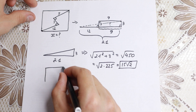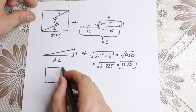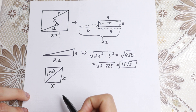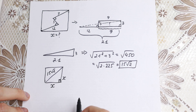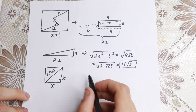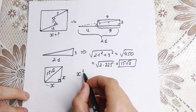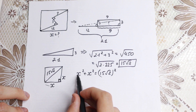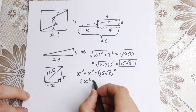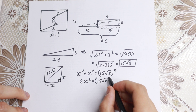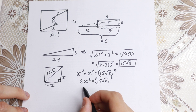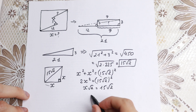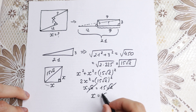If we have a square with a diagonal equal to 15√2, then inside this square we have side x, and x is the same on both sides — they are equal to each other. We also have a 90-degree angle, so this is the same Pythagorean theorem case. We have x² + x² = (15√2)². This gives us 2x² = (15√2)², and if we take the square root of both sides, we get x√2 = 15√2, so we can cancel the √2, giving us x = 15.